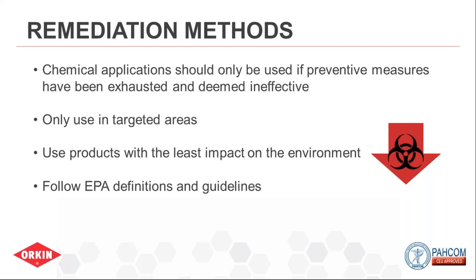Baits and containerized products are often tamper-resistant, so a child walking through an entryway can't access the ant bait inside. This eliminates potential non-target human exposure. Make sure your pest management provider can provide the EPA label for any product used — if they can't, that's an issue. You should be able to access product labels and SDS (Safety Data Sheets) for any products applied at any time.